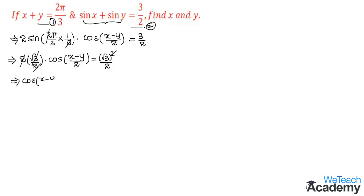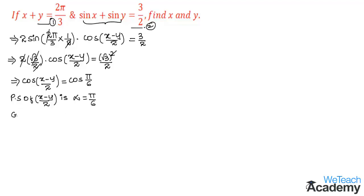So that implies cos((x−y)/2) is equal to √3/2, which is the value for cos(π/6). This equation is in the form of cos θ = cos k. Therefore the principal solution, where the angle (x−y)/2 is α, is equal to π/6. The general solution for this equation is given by 2nπ ± α, where n belongs to integers. So the general solution for (x−y)/2 equals 2nπ ± π/6.